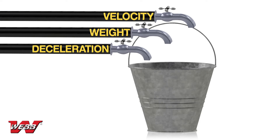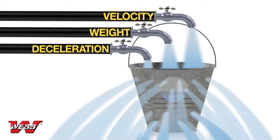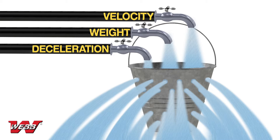All three of these variables — heat flow in, drum heat capacity, and heat flow out — affect the operating temperature of a brake drum, represented here by the water level in the bucket. The trick is to size the bucket and holes to match the heat input, so the bucket does not overflow.